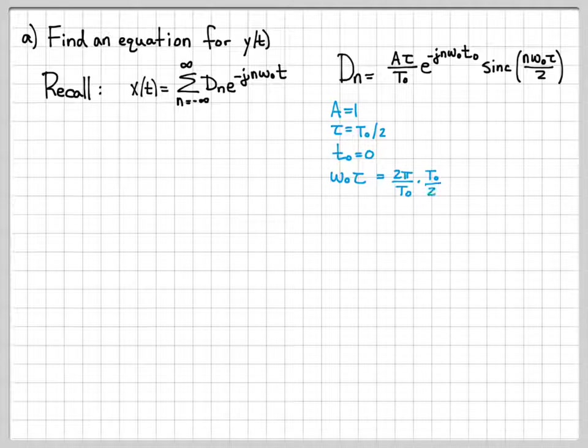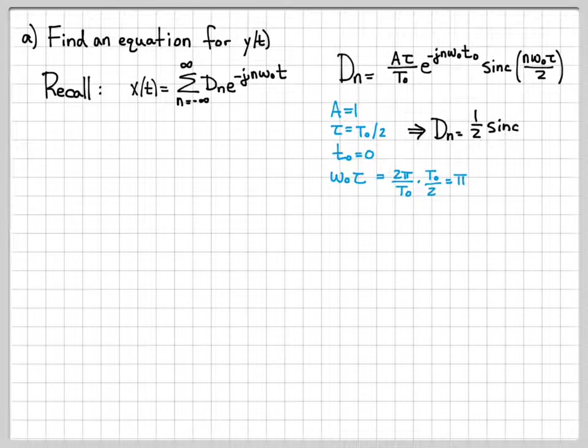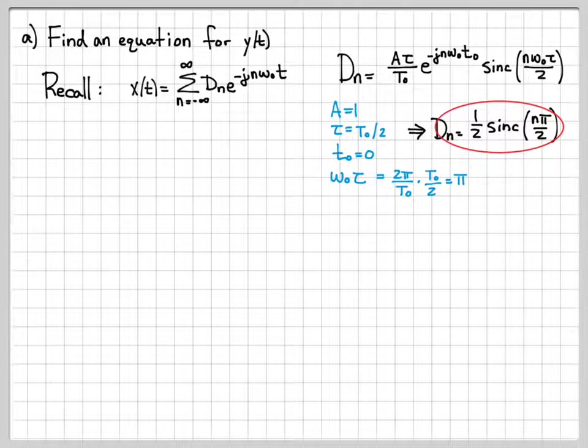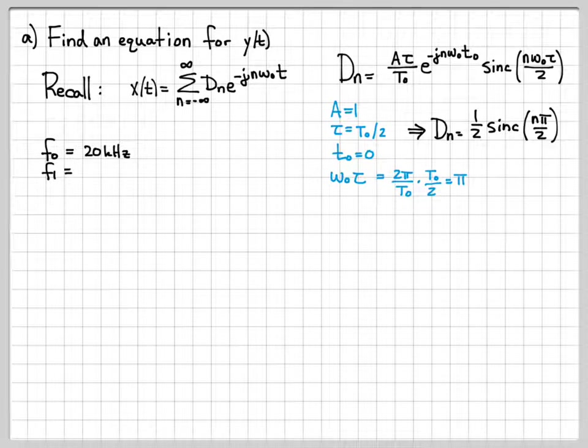Also, we know that omega naught times tau, we can compute what that is. Omega naught is always 2 pi over t naught. And in this problem, tau is equal to t naught over 2. So if we do that multiplication, we know that the product omega naught tau is equal to pi. So taking all these specific things for our problem into account, we can actually rewrite the exponential Fourier series coefficients as this simpler equation for this particular problem.